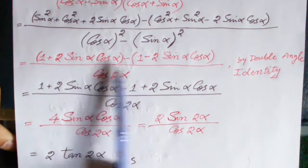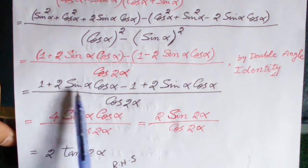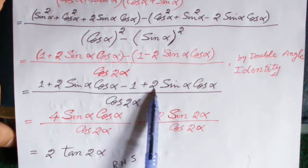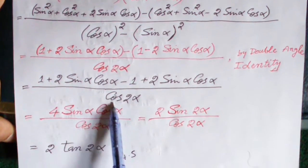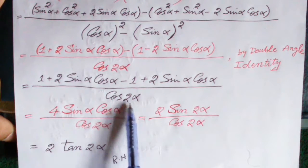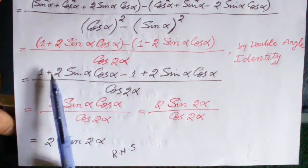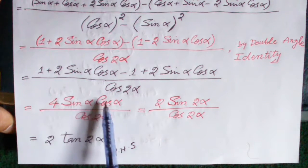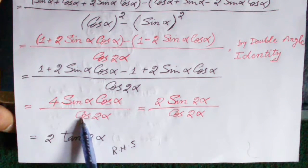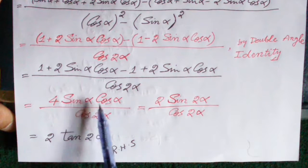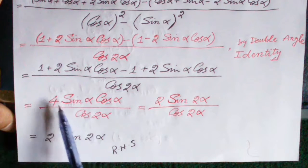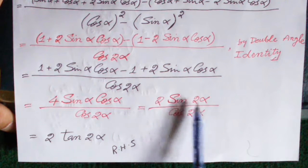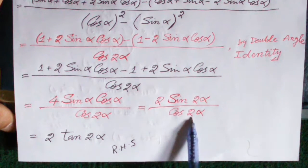Now simplify: the numerator becomes 1 + 2 sin α cos α minus (1 − 2 sin α cos α), divided by cos 2α. Cancelling 1 with 1 and adding the terms, we get 4 sin α cos α divided by cos 2α. Rearranging, we write this as 2 × (2 sin α cos α), which equals 2 sin 2α, divided by cos 2α.